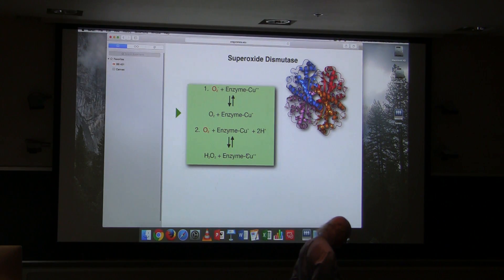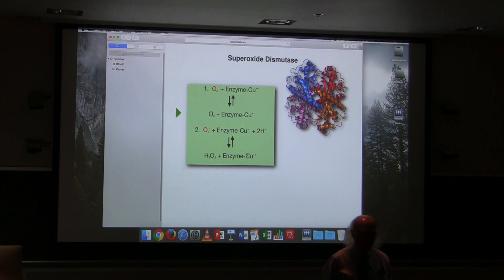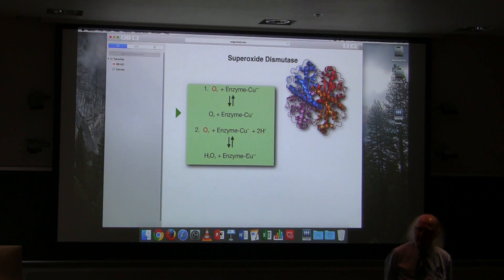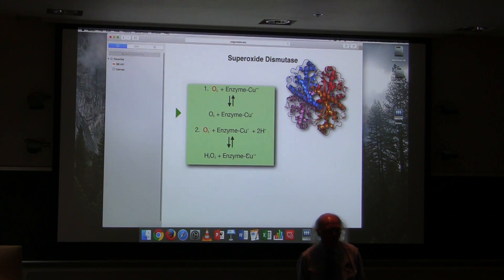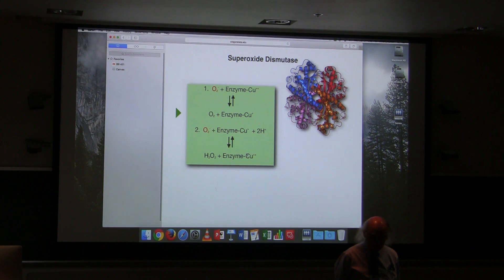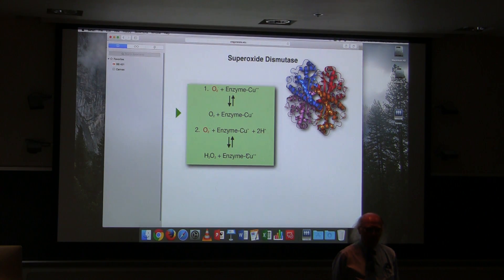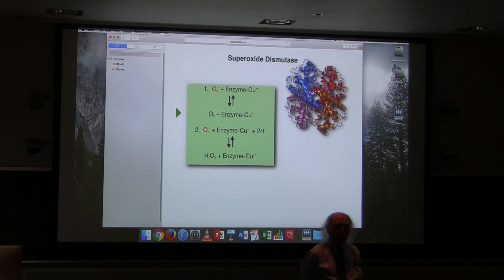Regarding complex 4: it uses four electrons. Why four? The terminal electron acceptor is oxygen. If you give molecular oxygen four electrons, you make something with four negative charges on two oxygen atoms. And if oxygen has two negative charges on it, it grabs protons. That's why you're making two waters. Molecular oxygen — O2 — takes four electrons to reduce it, and four protons join to make two waters. That's why it takes four electrons.